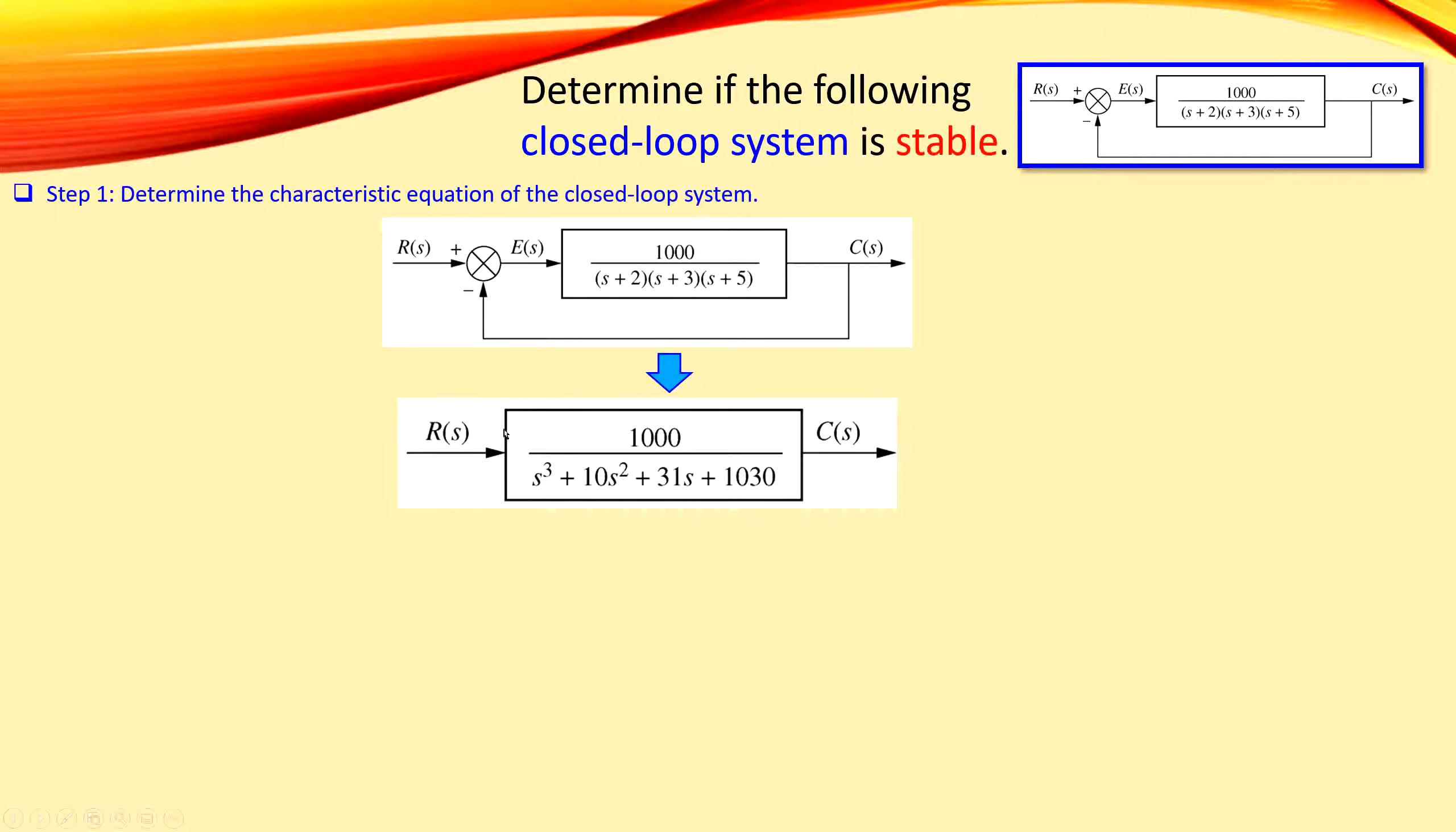From this we can now determine our characteristic equation. This is just the denominator of this expression. We have the characteristic equation which is s³ + 10s² + 31s + 1030 = 0. That is actually the characteristic equation.